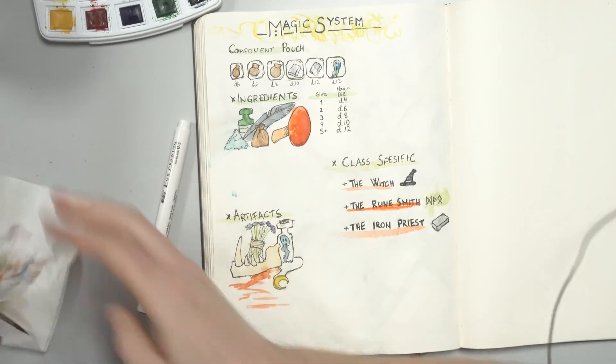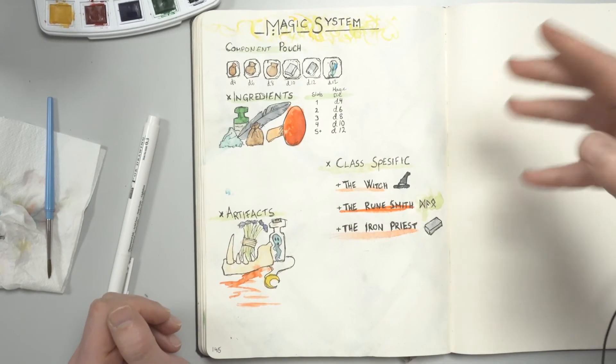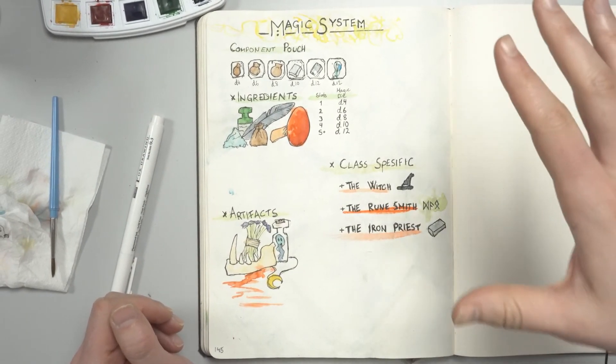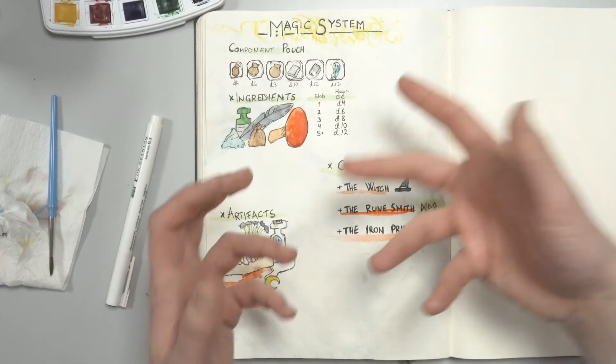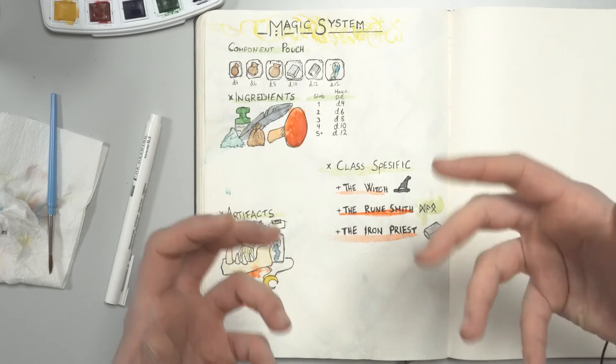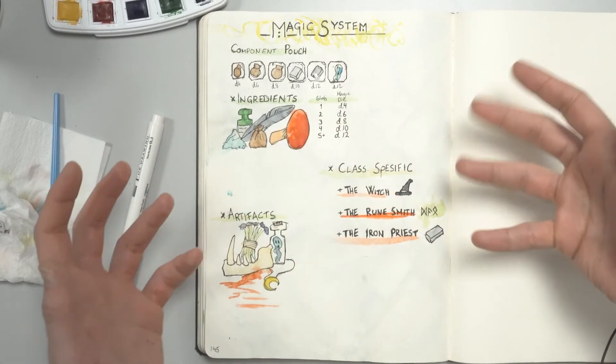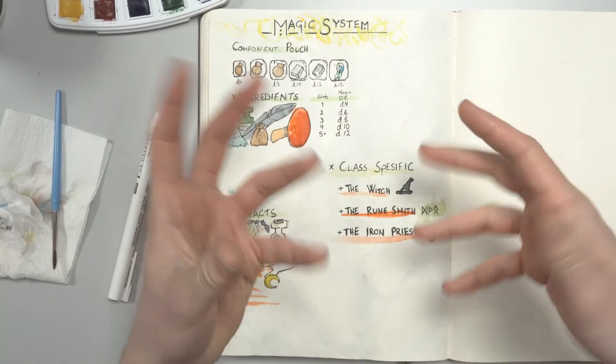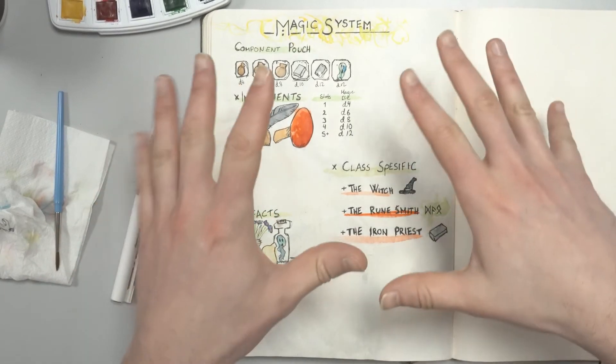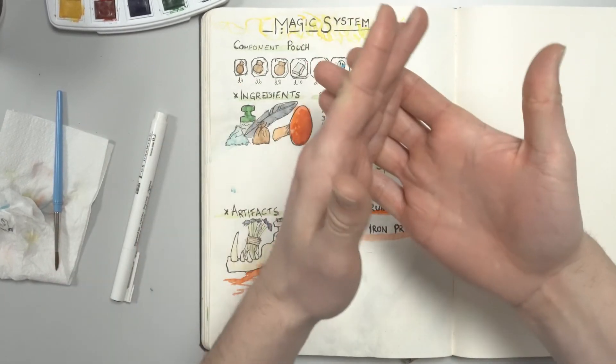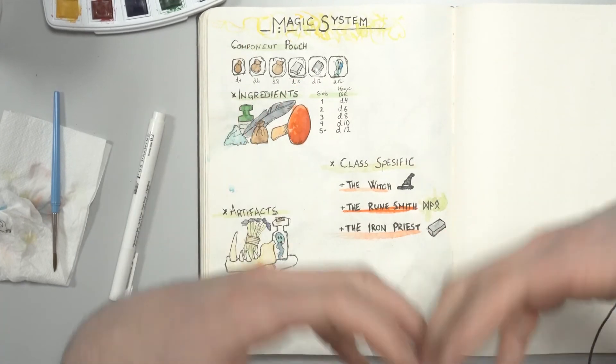The main goal of this magic system is that it is the same for all players. The ingredients and artifacts give players general tools they can use in free and creative ways, and the class-specific components unlock heavy-hitting abilities that have unique mechanics.